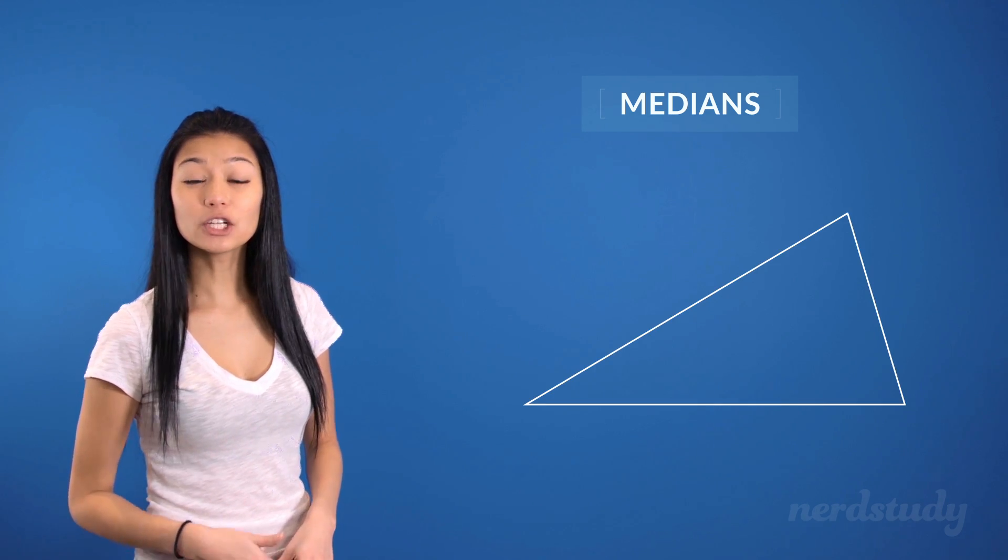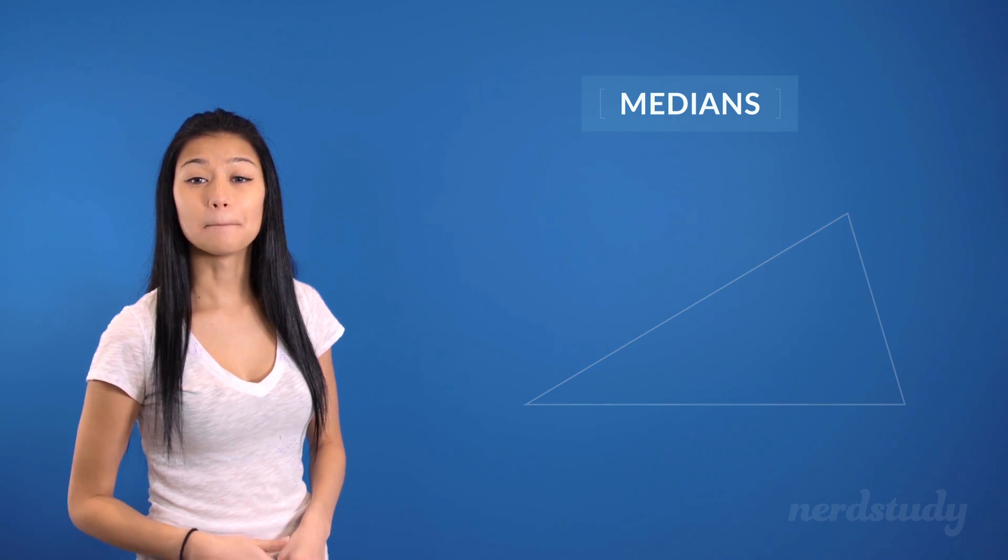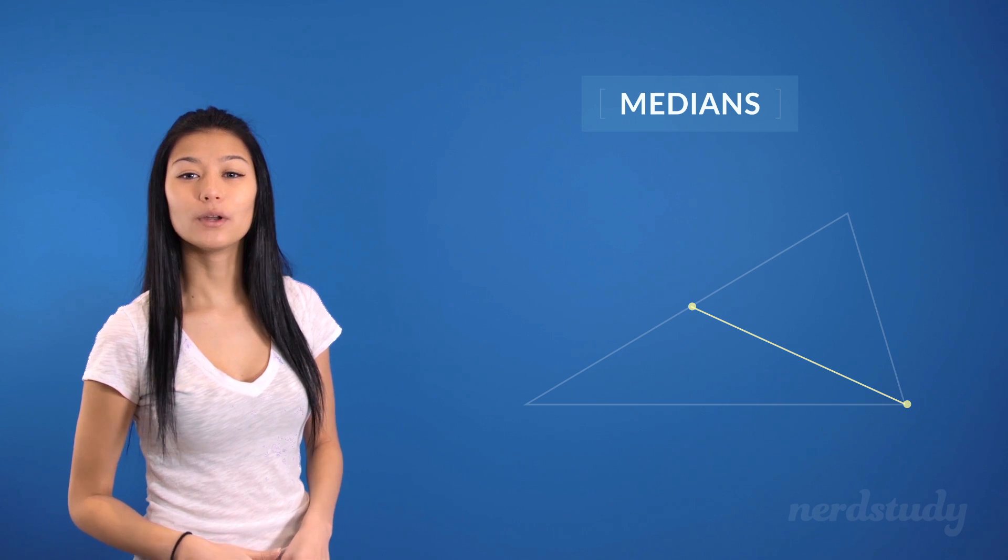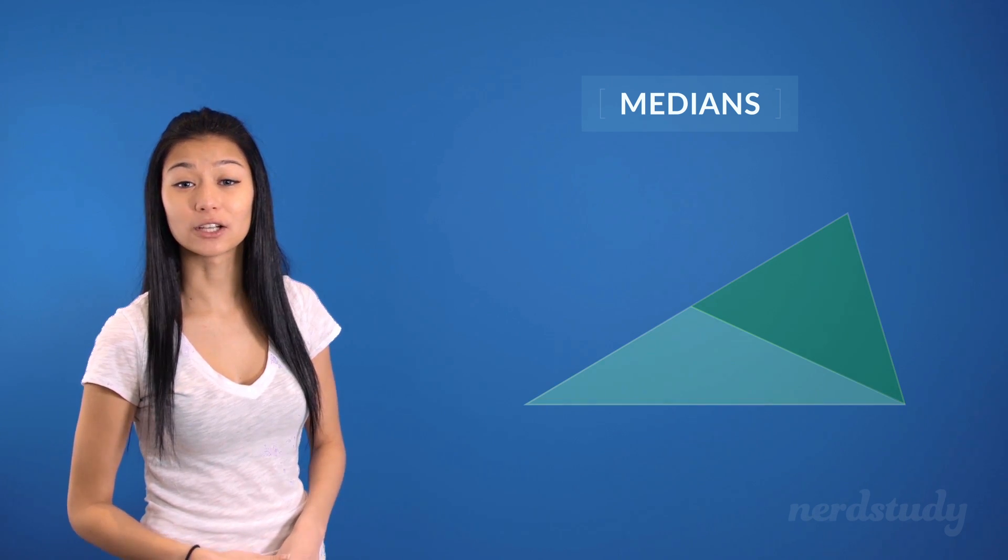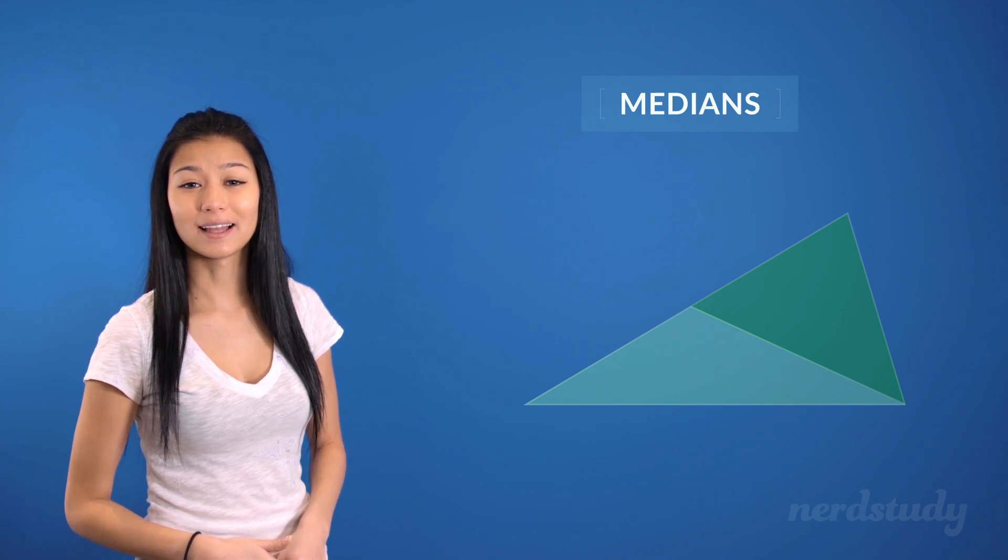So, of course, even in a triangle that looks a bit different, if we chose to create a median line from any vertex to its opposing midpoint, we'd also find that the two regions it creates are the exact same in area, even though it may not look like so at a glance.